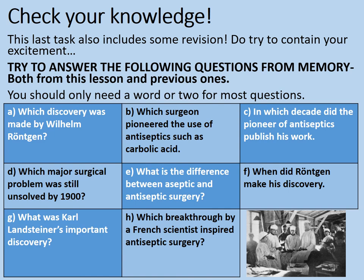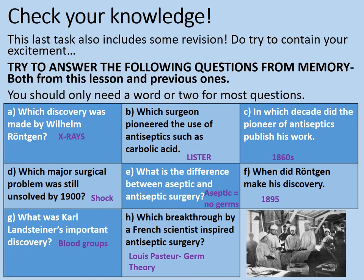Which discovery was made by Willem Röntgen? That was x-rays. Which surgeon pioneered the use of antiseptics such as carbolic acid? That was Joseph Lister. In which decade did the pioneer of antiseptics publish his work? In the 1860s. Which major surgical problem was still unsolved by 1900? That was shock. What is the difference between aseptic and antiseptic surgery? Aseptic surgery means that the germs aren't present. When did Röntgen make his discovery? 1895. What was Karl Landsteiner's important discovery? Blood groups. And which breakthrough by a French scientist inspired antiseptic surgery? That was germ theory, by Louis Pasteur.